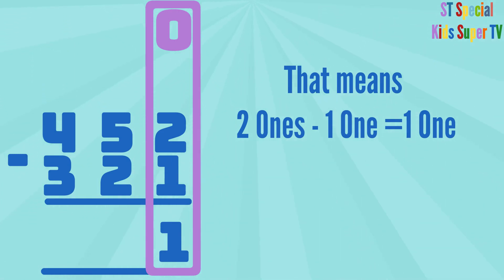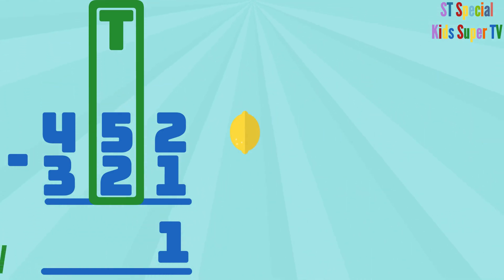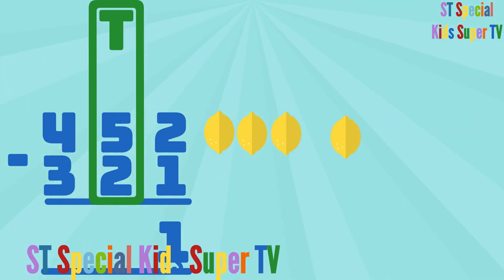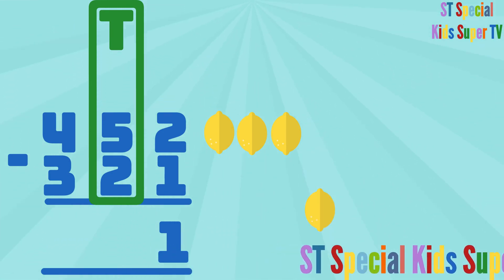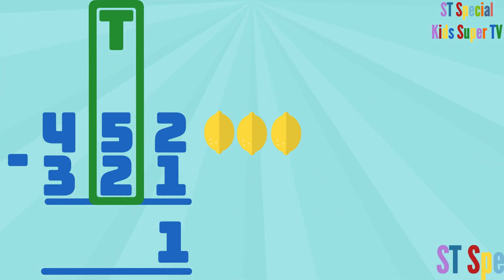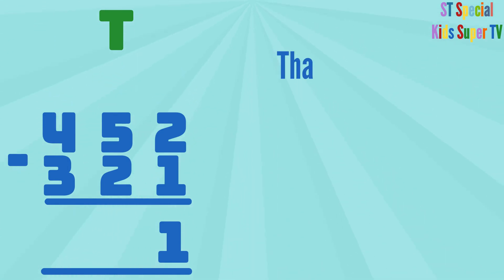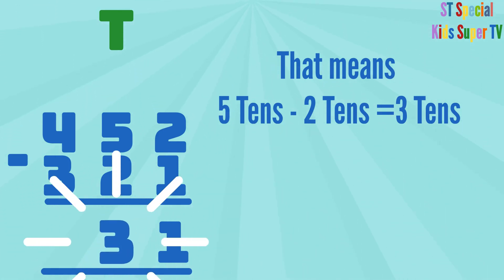So you write the 1 under the ones column. We then subtract the 10s: 5 tens minus 2 tens. 1, 2, 3, 4, 5 lemons minus 1, 2 lemons equals 1, 2, 3 lemons. That means 5 tens minus 2 tens equals 3 tens.